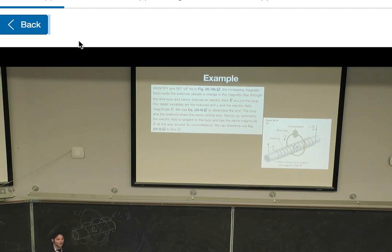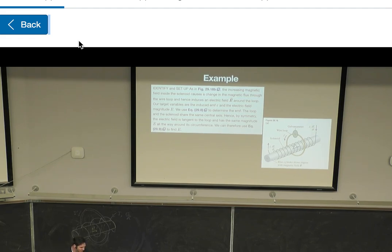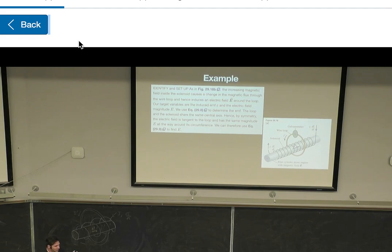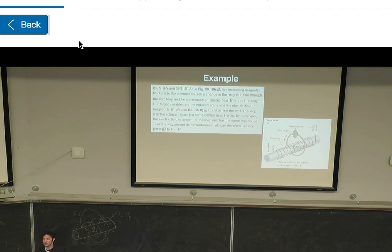Why is there a change in magnetic flux? Because the current is changing, and we know current generates a magnetic field by the right-hand rule, so a change in current generates a change in magnetic field. This is perfectly intuitive. So we have a change in B field, which induces an electric field around the loop. We can use equation 29.8 to determine the EMF. By symmetry, the electric field is tangent to the loop and has the same magnitude E all the way around its circumference, so we can use equation 29.9 to find the electric field.